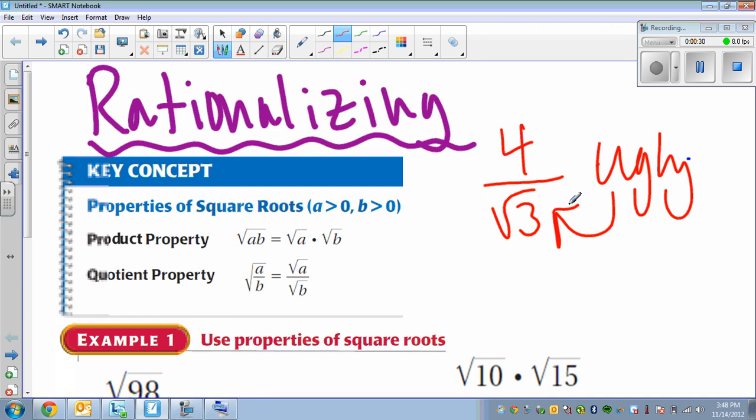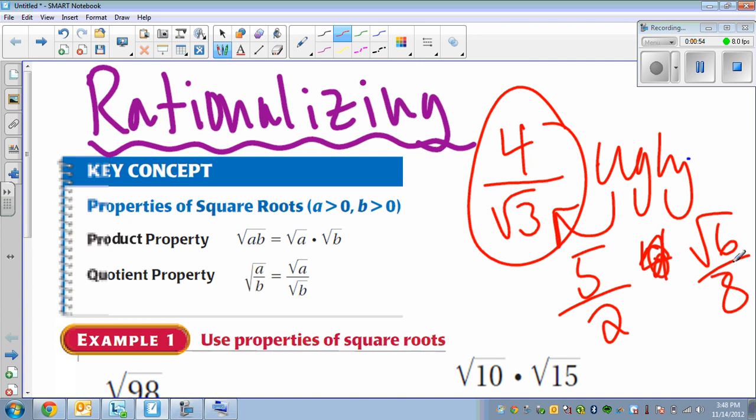Anytime you have a square root on the bottom, mathematicians call that an ugly sort of number. So we're just trying to do makeovers today, trying to turn ugly rationals into beautiful rationals, which would be like 5 over 2 or square root of 6 over 8. As long as there isn't a root on the bottom, we're okay.